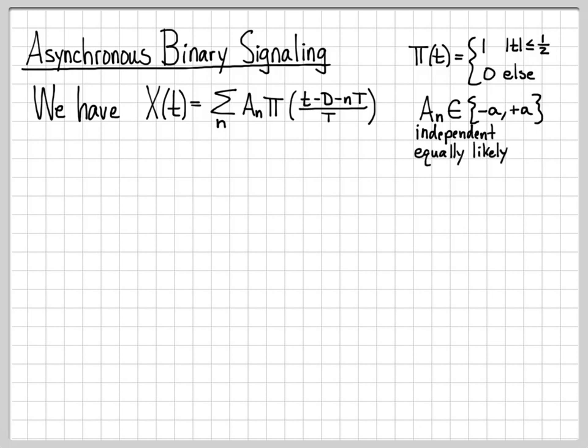We're also going to assume that they're equally likely. So when we randomly pick the amplitude for the next pulse, we are equally likely to get minus a as a.